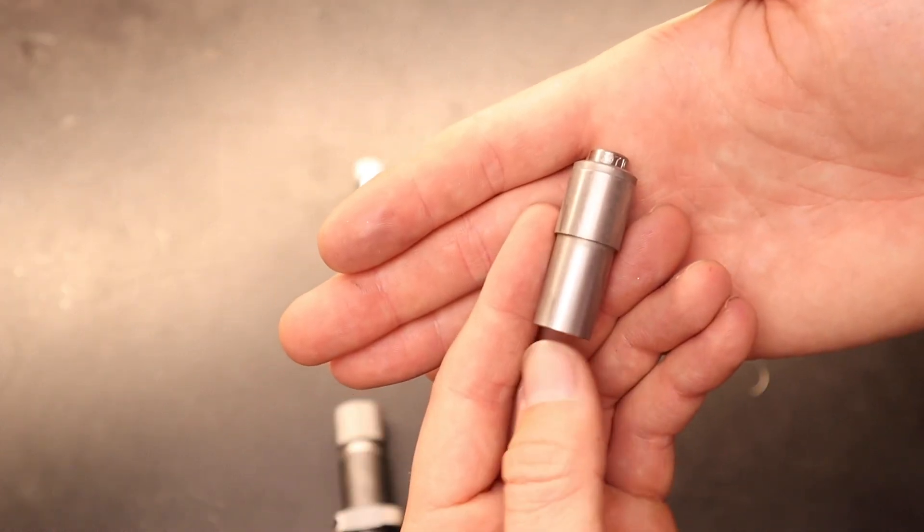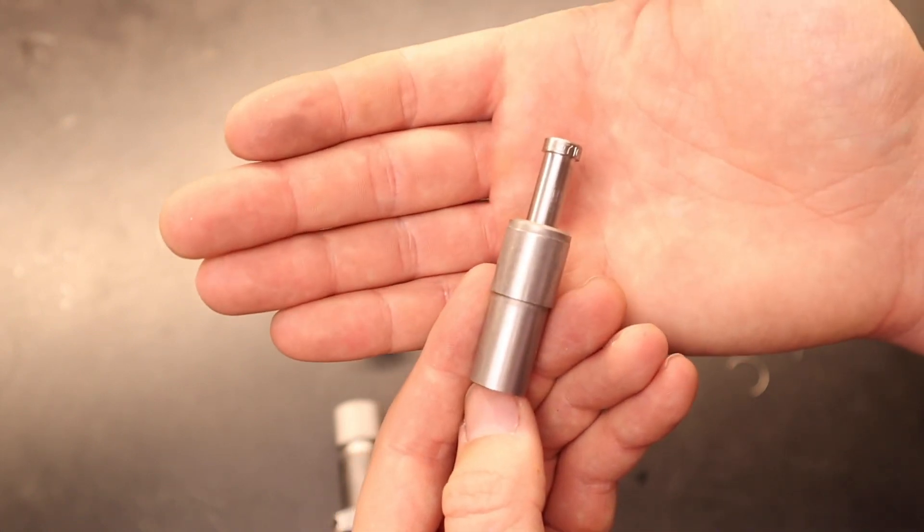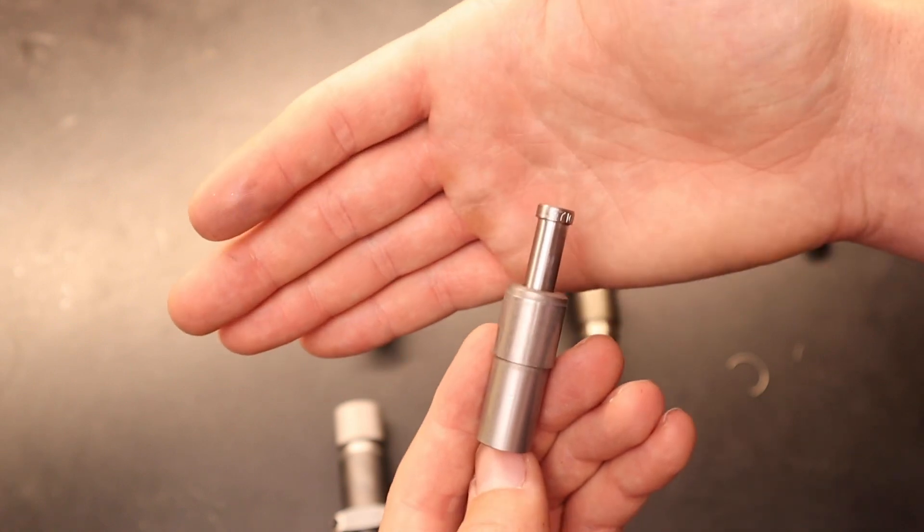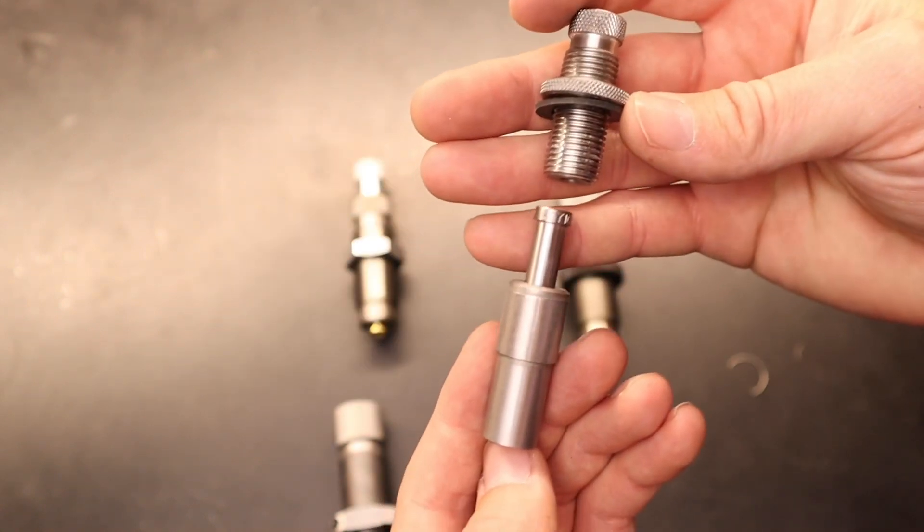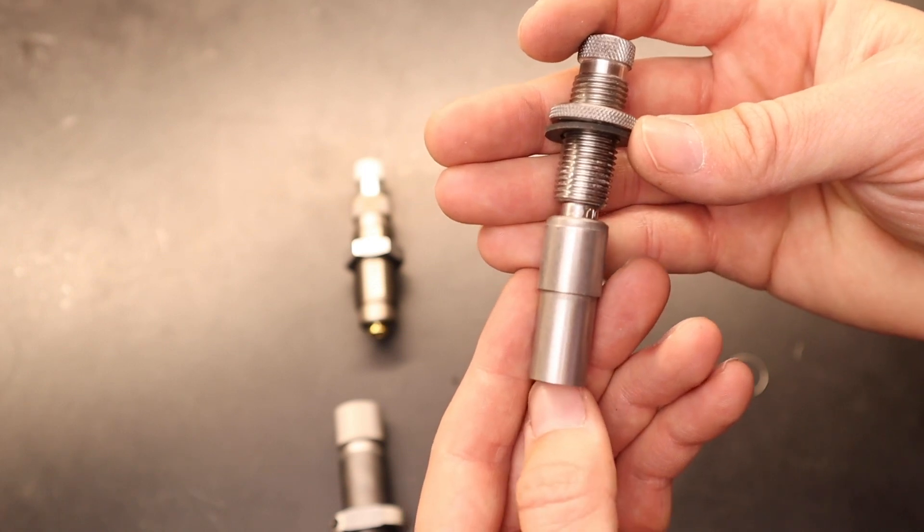So as you push your brass in there, if the bullet is not seated yet, it will pull the top of that seating stem out. And then once it reaches the top of the press stroke, it interacts with this guy, and as you lift your ram, it's going to start seating your bullet down into the brass.